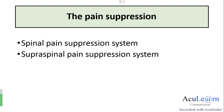That is at the synapse, at the dorsal horn where the first order neuron communicates with the second order neuron, the pain can be suppressed. It consists of two major components: the spinal pain suppression system and the supra-spinal pain suppression system.